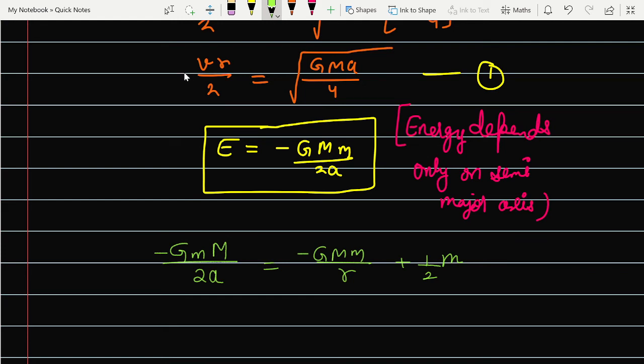Now we can put the value of v square here. v square you can put from equation 1, it's GMa upon r square. I hope it's clear here, the value of v square. So there are both things - energy conservation and momentum conservation that help you solve all the problems.